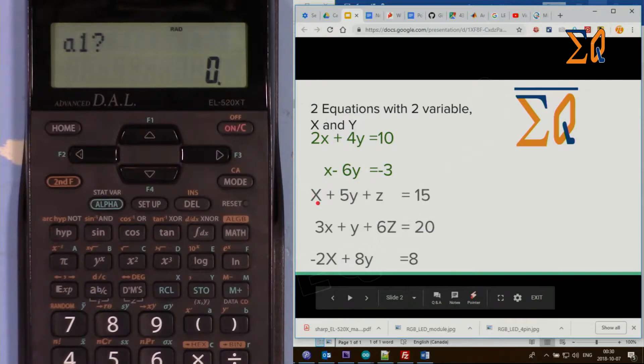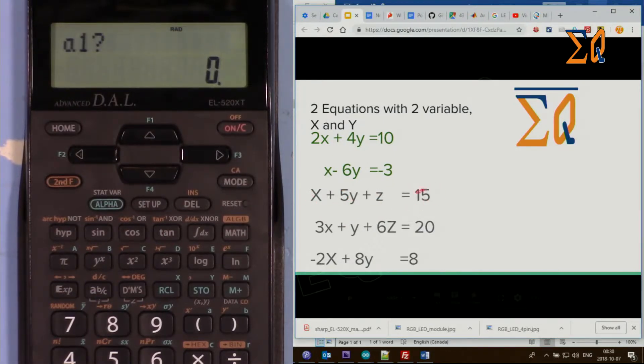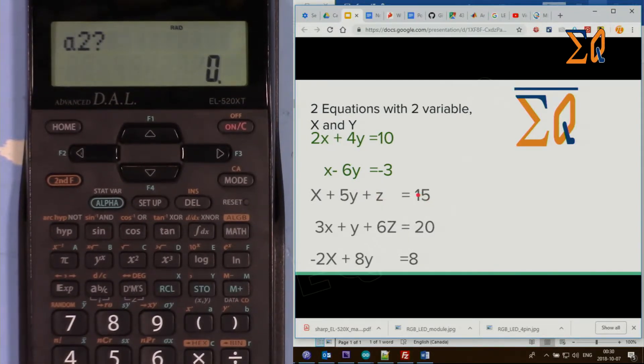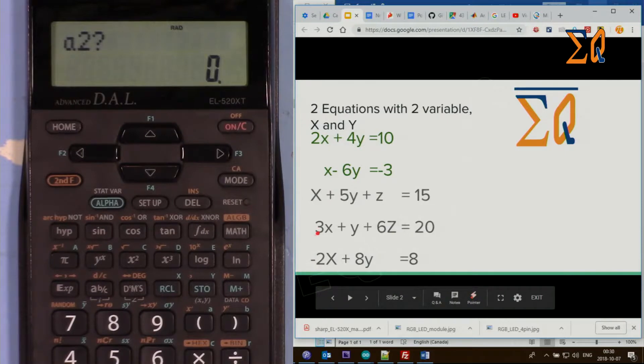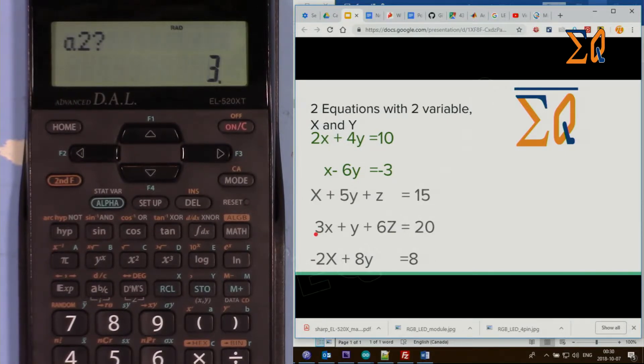This is now a1, b1, c1, and this is now d1. So a1 is 1 equal, and then 5 equal. For c this is 1 equal, and d1 is 15 equal. Now in the next one, this is a2, 3, I'm pressing equal sign, 1 and then equal sign, 6 equal sign, and d is 20 and then equal sign.